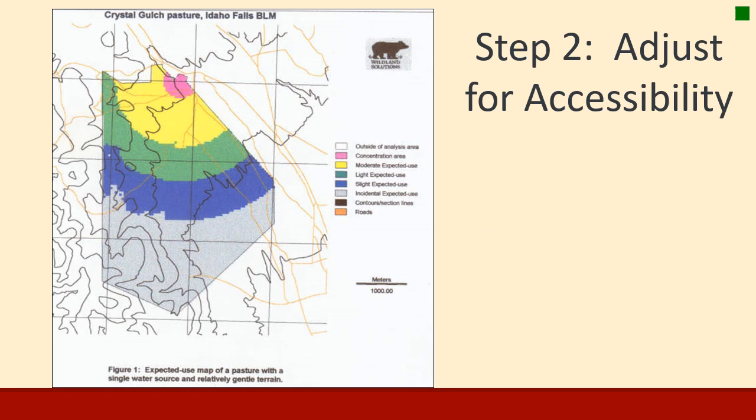This is an example of a pattern use map — showing how use looks across a whole pasture. There's an area of really concentrated use, the pink area, probably because of a water tank. Moving out from that, yellow is moderate use, green is light, blue is slight, and further out the land is essentially inaccessible or unusable. Even though you calculate available forage on your unit, not all of it is actually available, and you must account for distance from water.